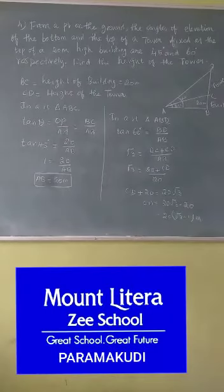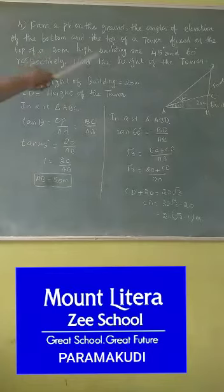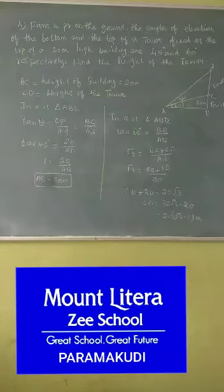Good morning students. Now the next question. From a point on the ground, the angles of elevation of the bottom and the top of a tower, fixed at the top of a 20 meter high building are 45 degree and 60 degree. Find the height of the tower.